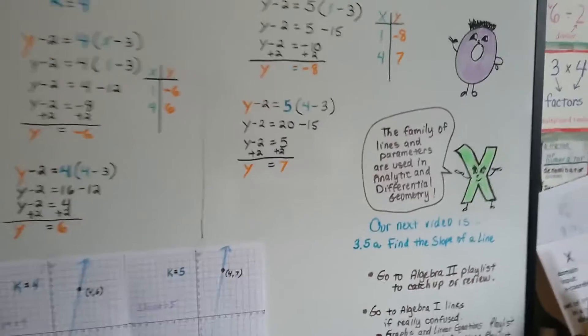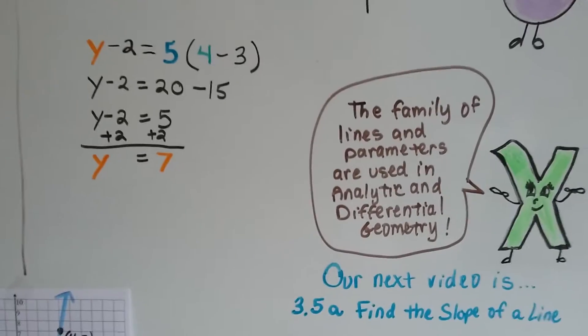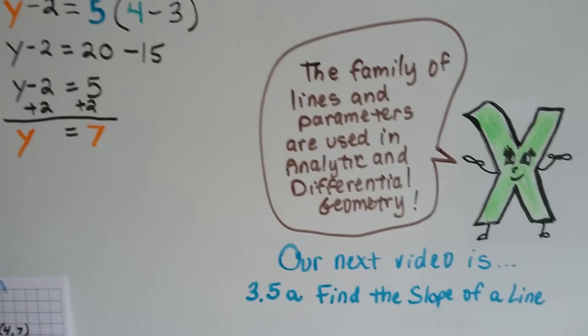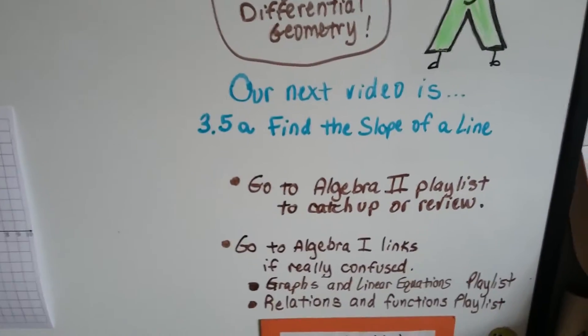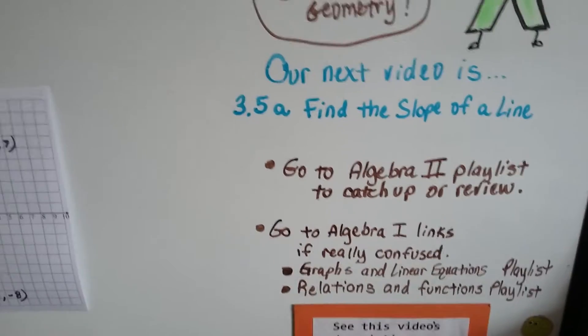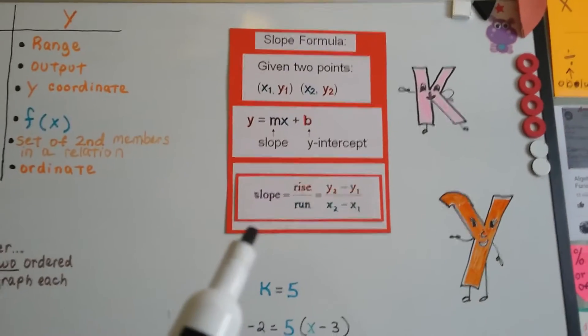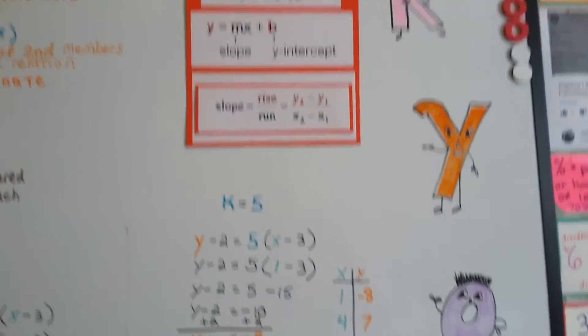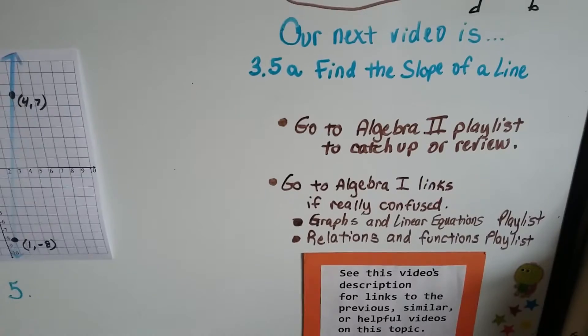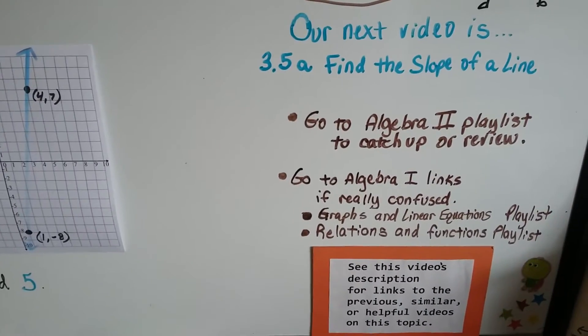The family of lines and parameters are used in analytic and differential geometry. And our next video is 3.5a, we're going to talk about how to find the slope of a line. We're going to discuss this slope formula coming up and the rise over the run for those of you who don't remember from Algebra 1. And I'm going to add this video to the Algebra 2 playlist right now.